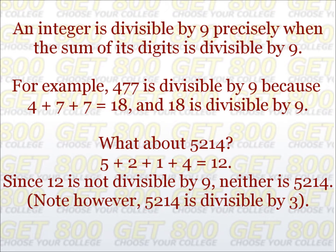An integer is divisible by 9 precisely when the sum of its digits is also divisible by 9. This rule is pretty much the same as divisibility by 3. For example, 477 is divisible by 9 because when we add 4, 7, and 7, we get 18, and 18 is divisible by 9. Let's check the number 5,214. When we add 5, 2, 1, and 4, we get 12. Since 12 is not divisible by 9, 5,214 is not divisible by 9. However, 5,214 is divisible by 3 because 12 is divisible by 3. Remember, the rules for divisibility by 3 and 9 are very similar.